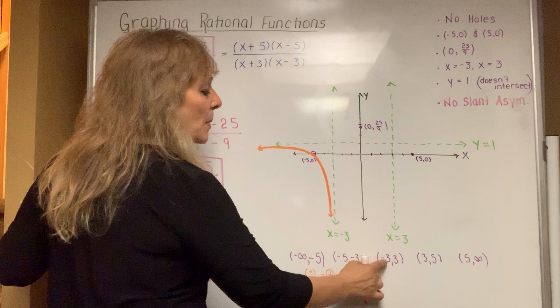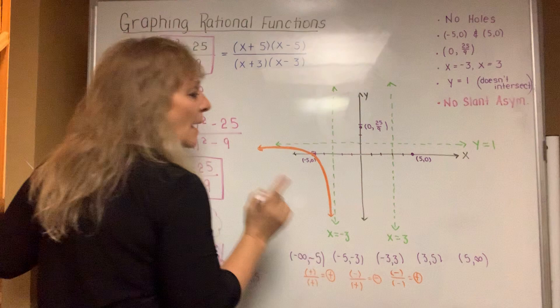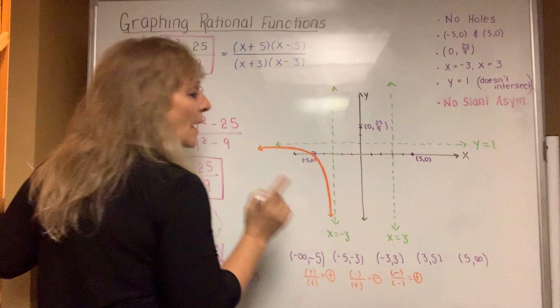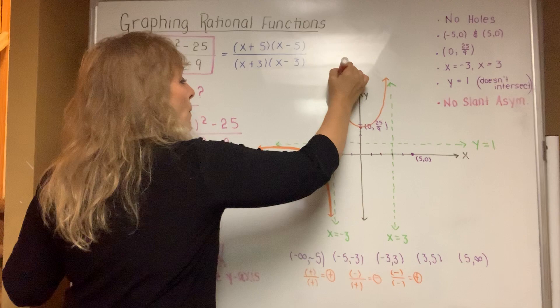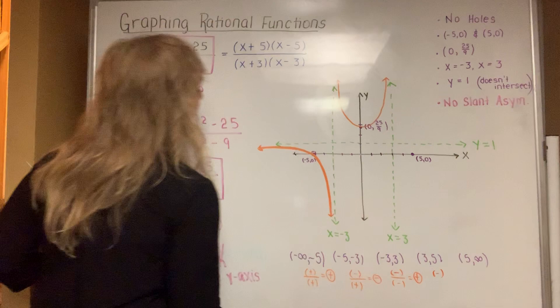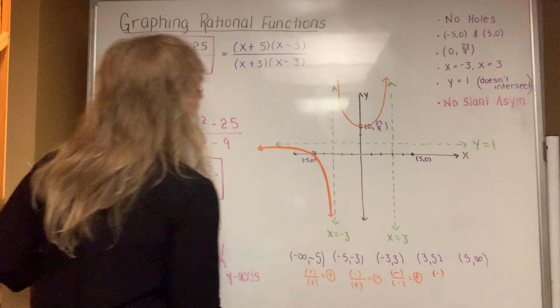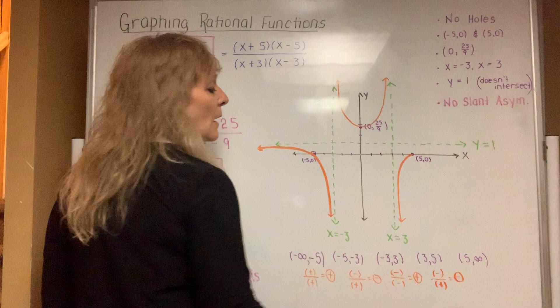For negative 3 to positive 3, pick zero: the top gives negative 25 and the bottom gives negative 9, so negative divided by negative is positive — above the x-axis. Since you're always above the x-axis in this interval, it looks like a parabola going up; it can't dip below. For 3 to 5, pick 4: 16 minus 25 is negative, 16 minus 9 is positive, so negative divided by positive is negative — below the x-axis.